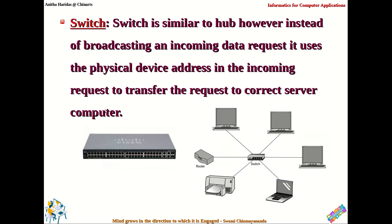We have another device called a switch, and this is also similar to a hub, but it is not going to broadcast the request. Instead, it will receive the request and use the physical device address — which you call media access control address, or MAC address — in the incoming request, and then transfer it directly to the correct server. In a hub, the request is broadcasted and the server has to identify and receive the data, whereas a switch identifies the server and directs the data to it. That is the very basic difference between hub and switch.